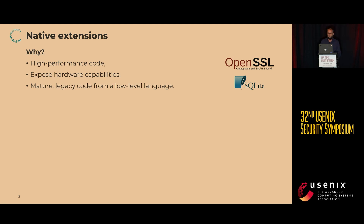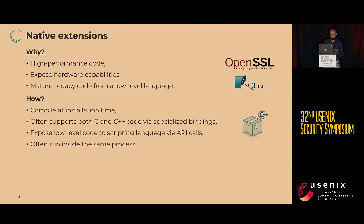Why do people use native extensions? Mostly for high-performance code — for example, packages like Pandas use a lot of C++ code. Also for exposing hardware capabilities like the Bluetooth API or the serial interface, or for mature libraries like SQLite and OpenSSL to make this code available to the scripting language.